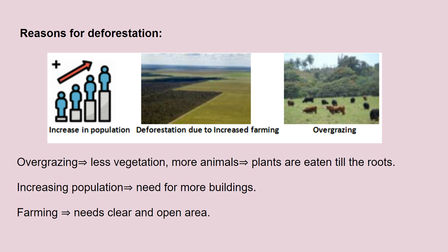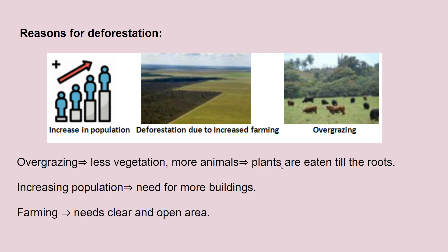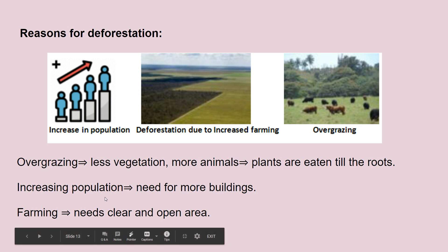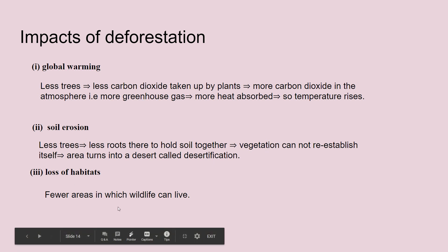Unfortunately in Pakistan, deforestation is commonly practiced. The reasons include overgrazing — in areas with less vegetation and more animals, animals eat plants down to their roots, reducing regrowth. Increasing population leads to more buildings and urbanization, requiring tree cutting. Farming also requires clearing open areas. The impacts of deforestation are global warming — fewer trees means more carbon dioxide, a greenhouse gas that absorbs heat and raises temperature — soil erosion because roots are no longer there to anchor the soil so wind and water carry it away, and loss of habitats leaving fewer areas for wildlife.